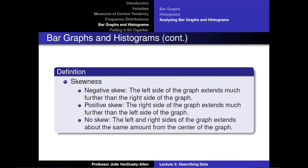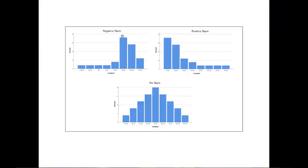The next characteristic to describe is skewness. If a bar graph or histogram has a negative skew, the left side extends much further than the right side. If it has a positive skew, the right side extends much further than the left side. If there is no skew, the left and right sides extend about the same amount from the center.